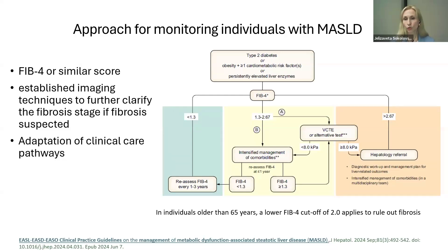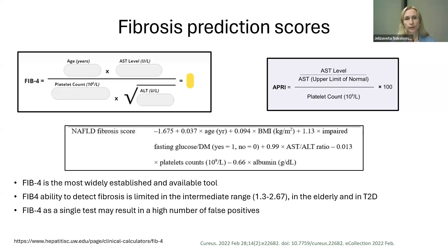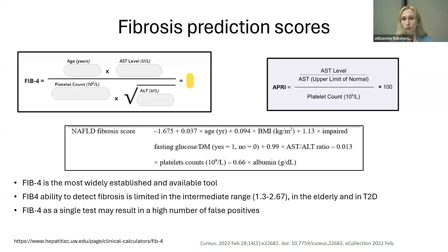If FIB-4 is above 2.67, hepatology referral is recommended. In individuals older than 65 years, a lower threshold of 2.0 should be used to rule out fibrosis. FIB-4 is the most widely established tool, using age, transaminases, and platelet count as input variables — easily calculated online during a patient visit. APRI is another commonly used score; the NAFLD fibrosis score has a more complex formula. Many clinical laboratories now incorporate FIB-4 into their routine output.